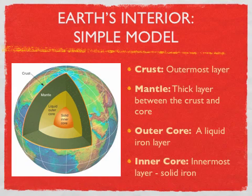Let's start with the simple model, though. The first and outermost layer of the Earth is called the crust. As we get a little deeper, we reach the mantle. The mantle is just the thick layer between the crust and the core.